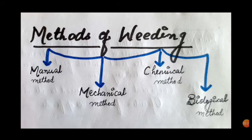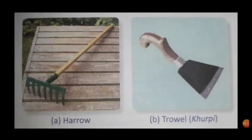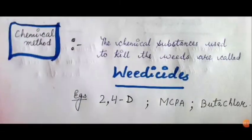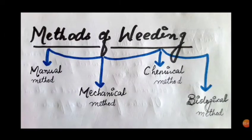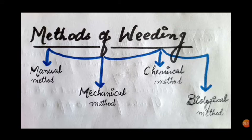Now we'll discuss the methods of weeding. There are four types: first is the manual method, second is the mechanical method, third is the chemical method, and the fourth is the biological method. The manual method is the method in which weeds are removed by pulling them out by hand. It is a very common method — weeds are simply removed by pulling them with your hand.